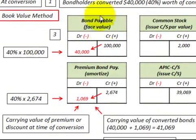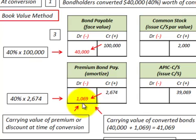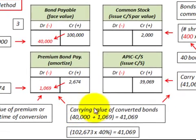We reduce bonds payable on the balance sheet by 40%, or $40,000. The premium to bonds payable is also reduced by 40%, based on the carrying value of the premium at the time of conversion. That amounts to $1,069 — which is 40% of the premium balance. So our total carrying value of the converted bonds is $40,000 plus $1,069, equaling $41,069.